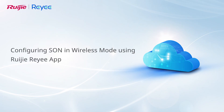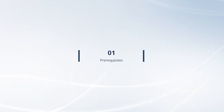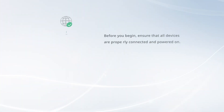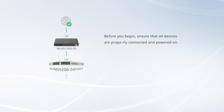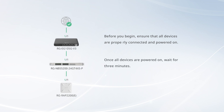This video shows how to configure a self-organizing network using the Weijia Rii app. Before you begin, ensure that all devices are properly connected and powered on. Once all devices are powered on, wait for 3 minutes.